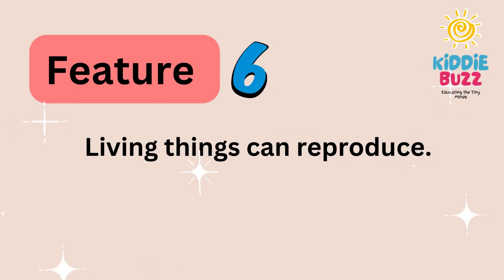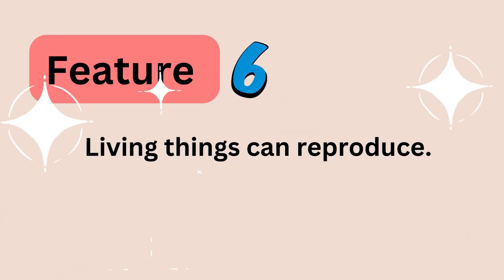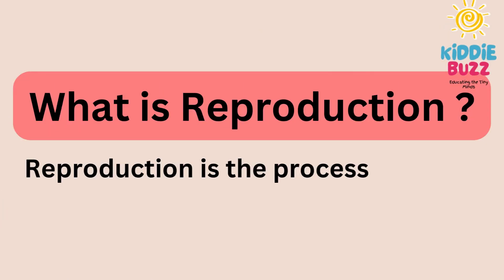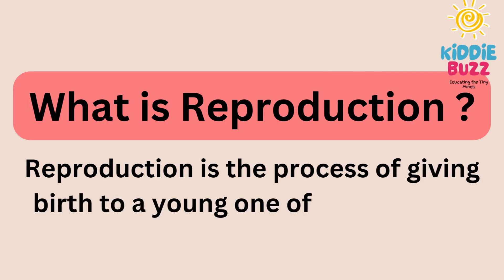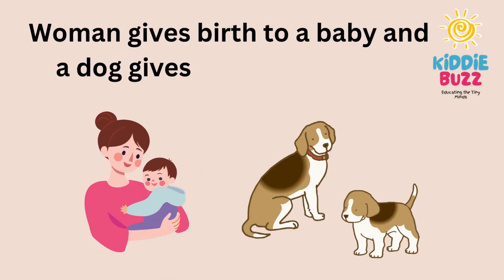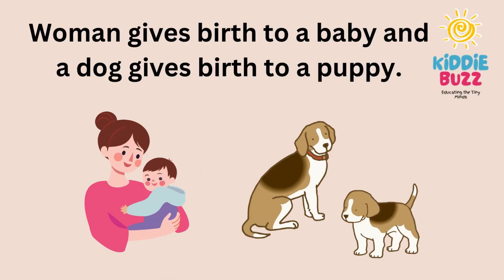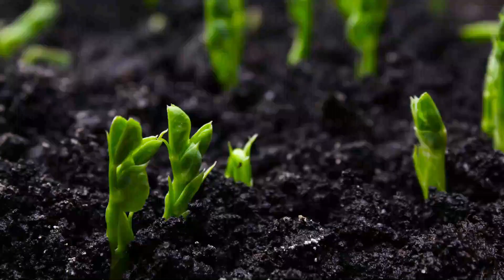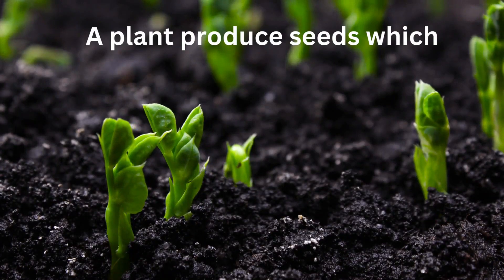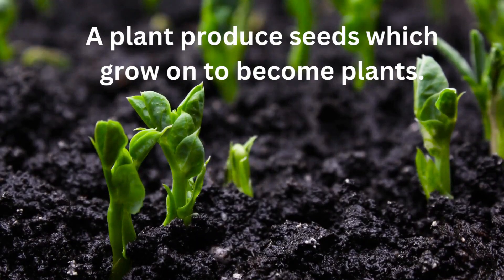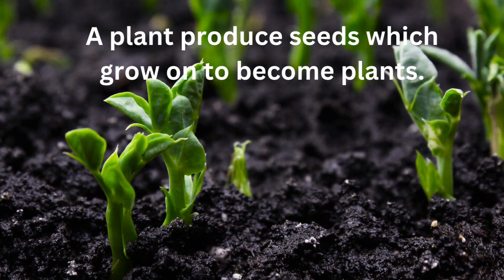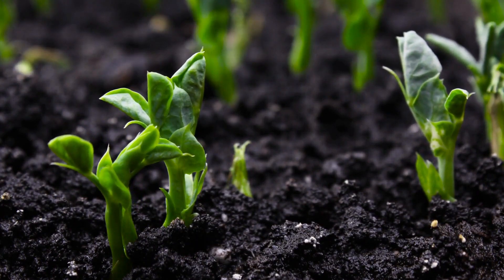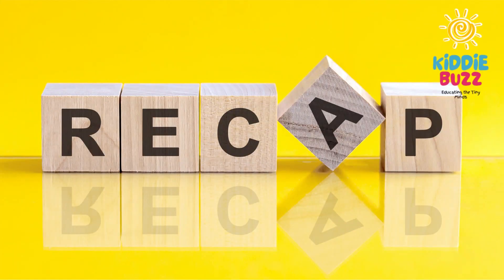Another feature of living things is they can reproduce. What is reproduction? Reproduction is the process of giving birth to a young one of its own kind. A woman gives birth to a baby and a dog gives birth to a puppy. A plant produces seeds which grow on to become plants. Let's take a recap of the whole concept.